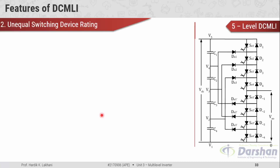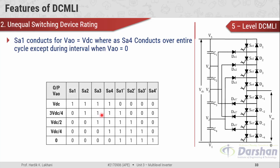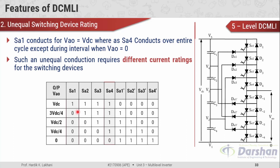The next feature of DC MLI is unequal switching device ratings. From the switching table, switch SA1 conducts only when VAO equals VDC, meaning for the fifth level only, whereas SA4 conducts over the entire cycle except the first level. SA1 remains in the on state condition for only one level, whereas SA4 must remain on for four levels. Such an unequal condition requires different current ratings for the switching devices.